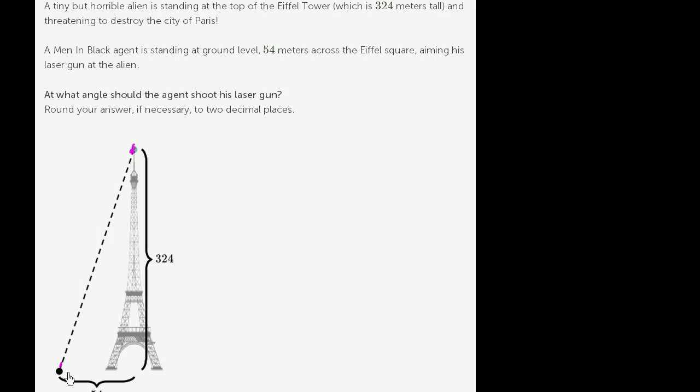So if we construct a right triangle here, the height of this right triangle is 324 meters. This width right over here is 54 meters. It is a right triangle.